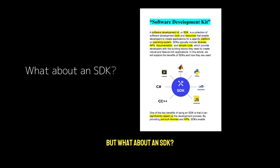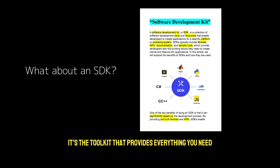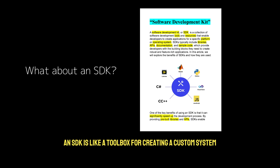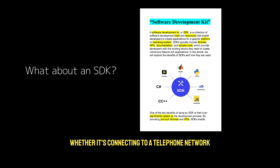But what about an SDK? An SDK is much more than just an interface. It's the toolkit that provides everything you need to implement that API into your application: libraries, tools, documentation, and sometimes even sample code. An SDK is like a toolbox for creating a custom system that hooks into the existing infrastructure, whether it's connecting to a telephone network or plugging into a home's electrical wiring.